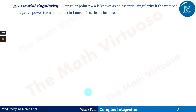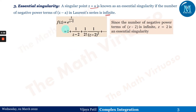The next type is essential singularity. A singular point z = a is known as essential singularity if the number of negative power terms of (z − a) in the Laurent series is infinite. For example, f(z) = e^(1/(z−2)): expanding using the Maclaurin series gives 1 + 1/(z−2) + (1/(z−2))² / 2! + ... Since the number of negative powers of (z − 2) is infinite, z = 2 is an essential singularity.